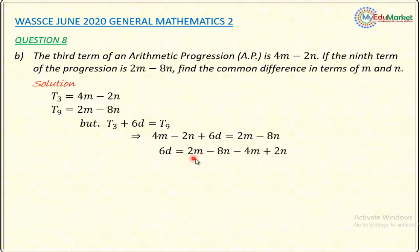4M taken becomes minus 4M, and minus 2N taken to the right-hand side becomes positive 2N. So, I'll collect like terms here: 2M minus 4M is minus 2M, and minus 8N plus 2N is minus 6N. So, 6D equals minus 2M minus 6N.